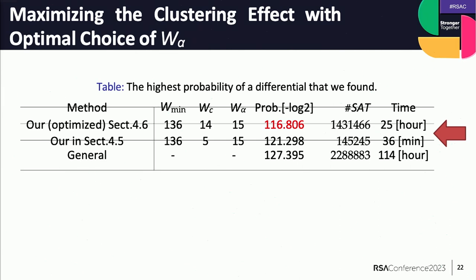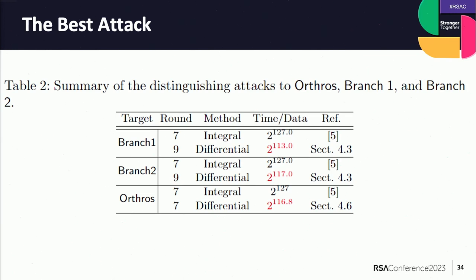Our method investigates the clustering effect in each branch starting from weight zero. However, by using knowledge of the minimum weight of each branch, we can improve our approach by initiating the evaluation of the clustering effect at the minimum weight of each branch. This maximizes the probability of a given differential by utilizing the information of minimum weight of each branch and the optimal selection of W_alpha. This table shows the result of this optimization with W_alpha equals 15, and we can further improve the probability.